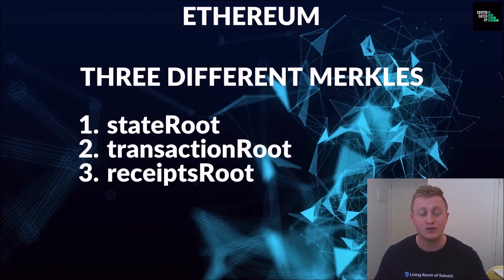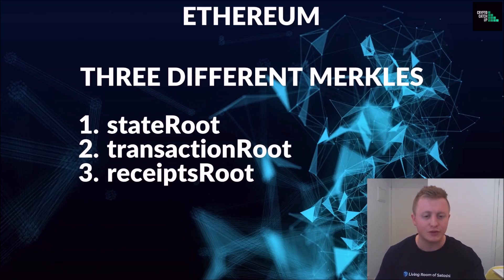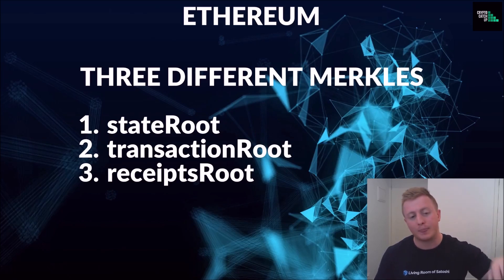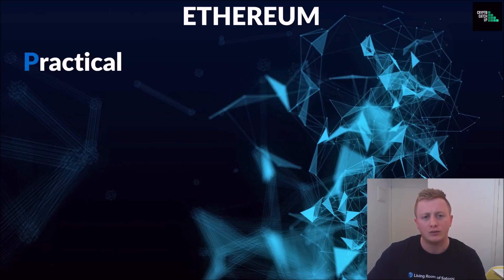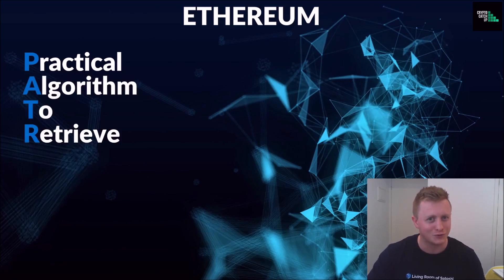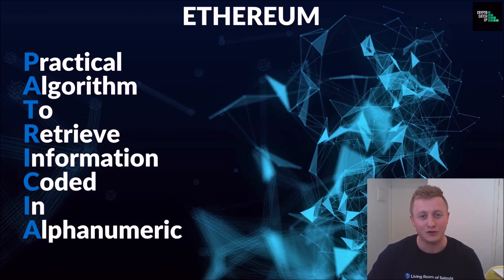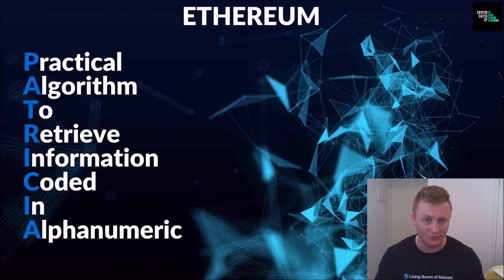Instead of using one Merkle tree, Ethereum uses three different Merkles to achieve that global state and have extra ability to query data within their blockchain. They have a state root, which is essentially the state of the block; the transaction root, which is fairly self-explanatory; and the receipts root — which is something like your gas used. The state root covers things like your accounts, because Ethereum is an account-based system rather than Bitcoin's UTXO — unspent transaction outputs. Patricia actually stands for something: Practical Algorithm to Retrieve Information Coded in Alphanumeric.